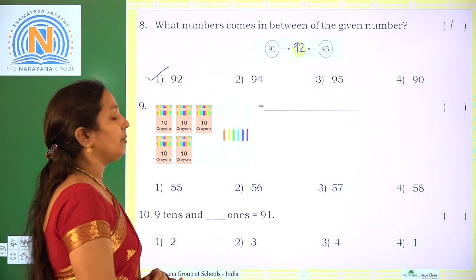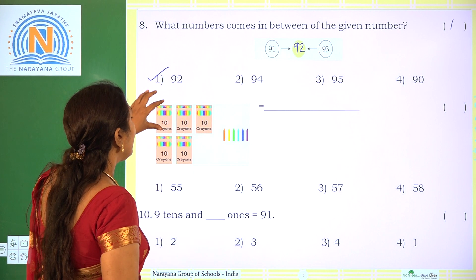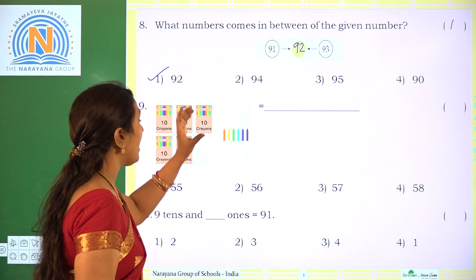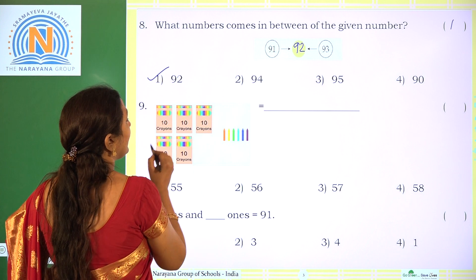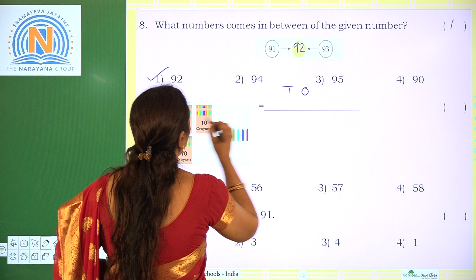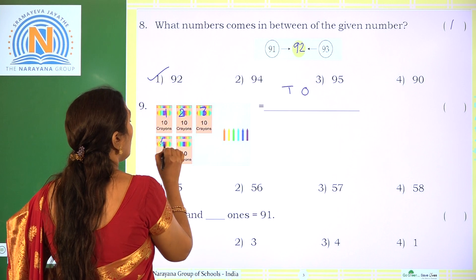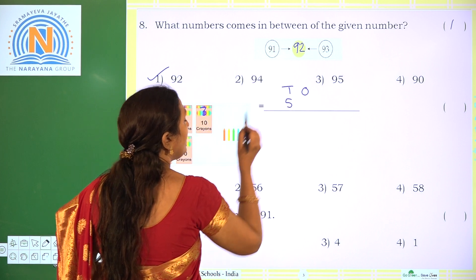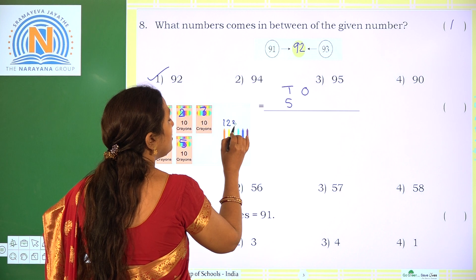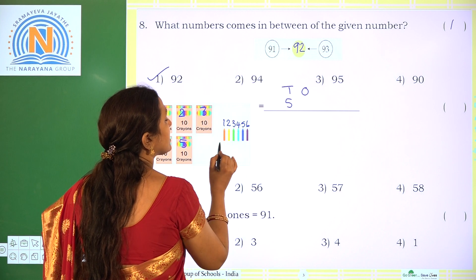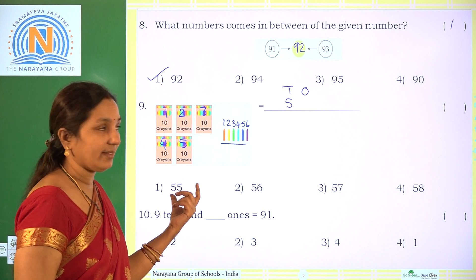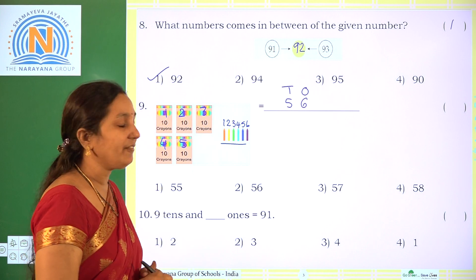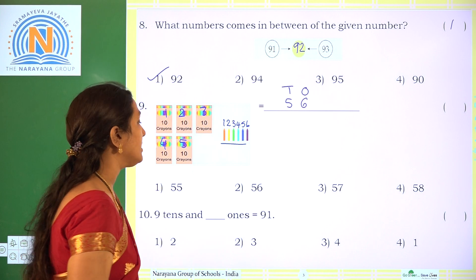Next, count the given crayons. Each box has 10 crayons. How many tens are there? Count: 1, 2, 3, 4, 5 — so 5 tens. How many single crayons are there? 1, 2, 3, 4, 5, 6 — so 6 ones. The number is 56. The correct option is option 2.